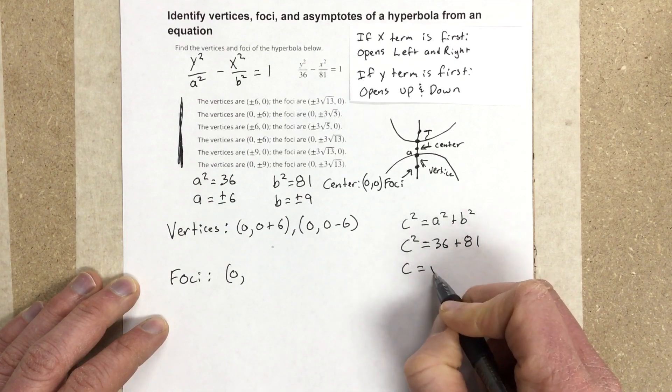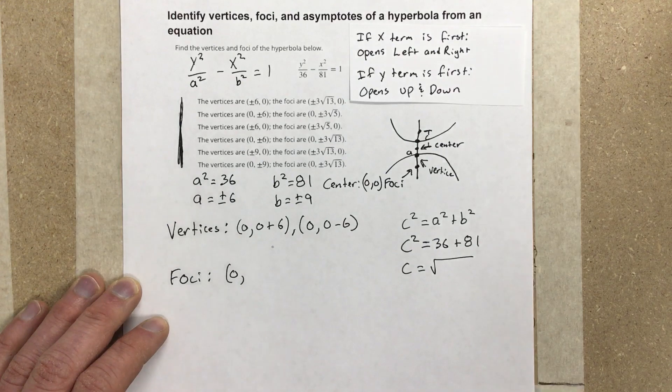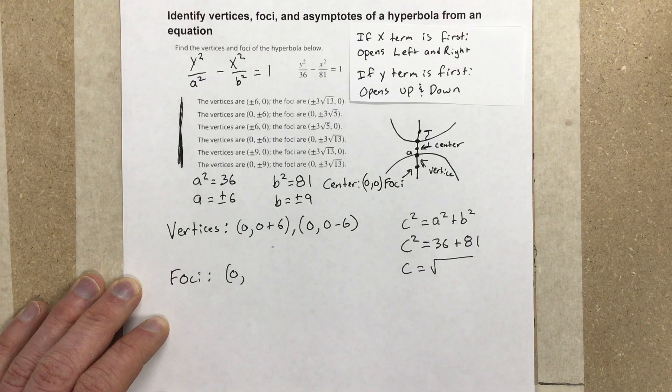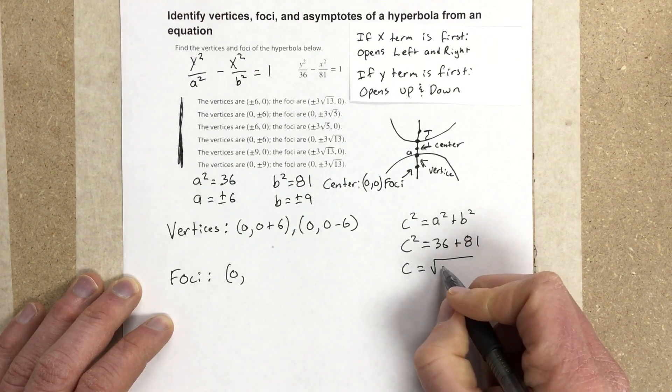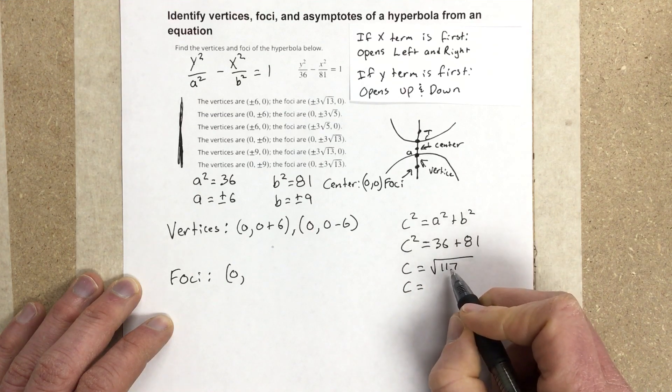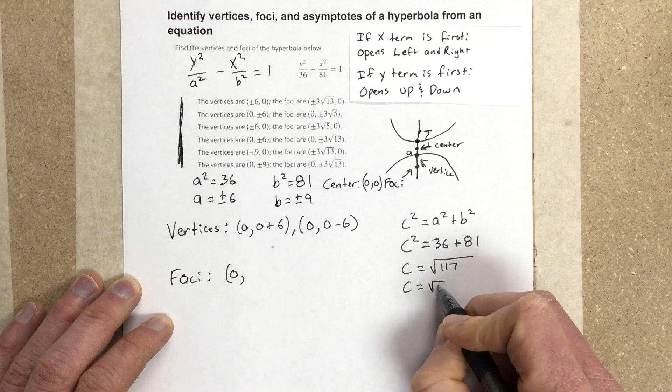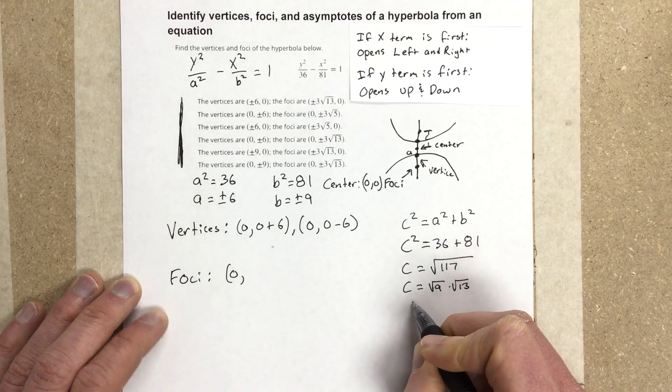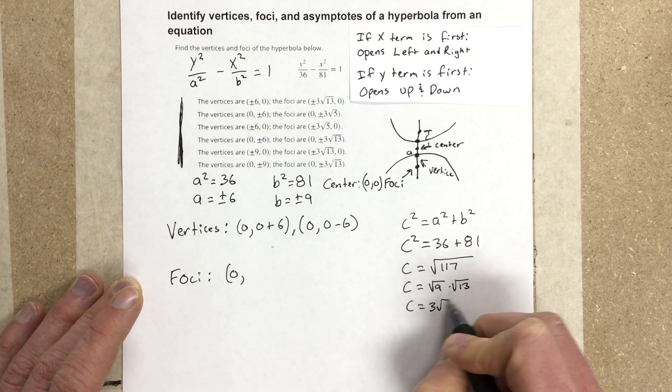If I go ahead and square root that, I have c is equal to the square root of, use the calculator, and we'll get the square root of 117, which would give you, I can take this and write this as square root of 9 times square root of 13. Square root of 9 is 3 root 13.